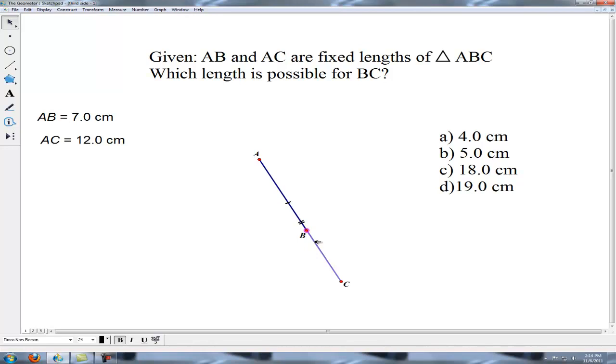But the problem with this is we no longer have a triangle. So for triangle ABC to exist, B cannot be collinear with A and C, so there is a minimum right there. The segment addition postulate might give us a clue about figuring out that length if this one is 12 and this one is 7.